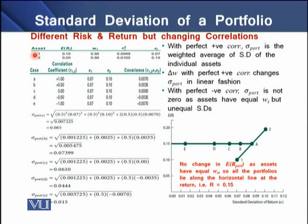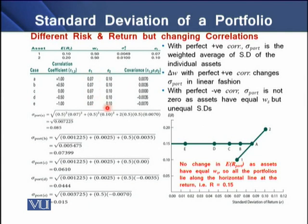We have two assets — asset one and asset two — with corresponding expected rates of return, and these two assets have equal weights. We have covariances and variances of these individual assets. We have five cases, each with an individual coefficient of correlation, standard deviation for asset one, standard deviation for asset two, and covariances. Using all these data, we determine the portfolio riskiness, that is, the standard deviation of the portfolio in all five cases.